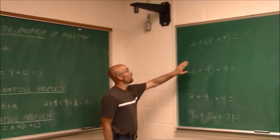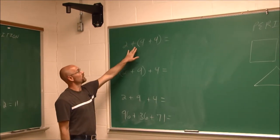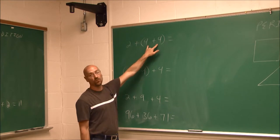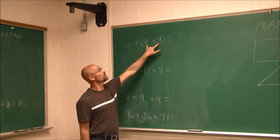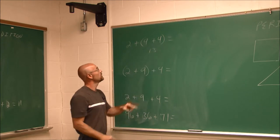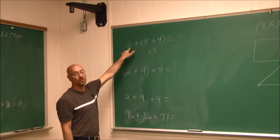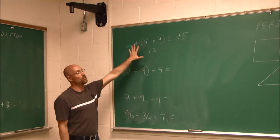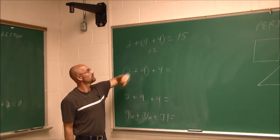All right, so here I have 2 plus 9 plus 4. And I want to combine the 9 and 4 first. So 9 and 4 is 13. So I'm just going to write that underneath here, 13. 13 plus the 2 is going to give me 15. So that's one way to do that addition of a set of numbers.